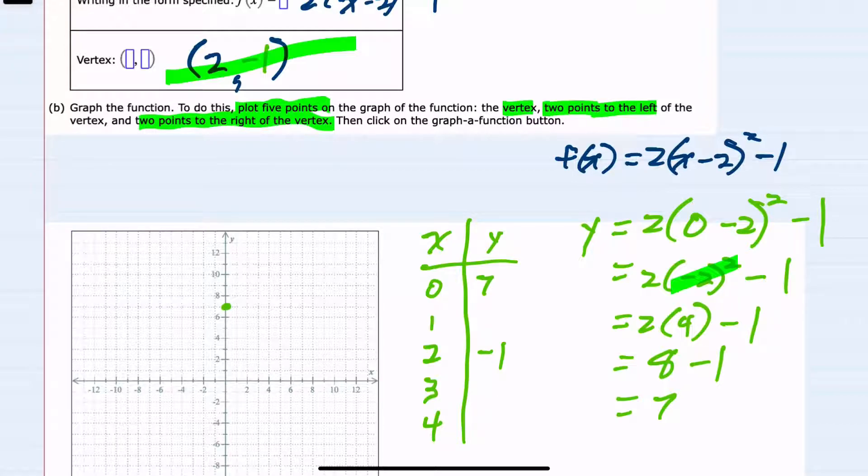We'll move to the next x value, which is 1. Now we're replacing the x with 1. Inside the parentheses, we now have 1 - 2, which is -1 squared. Moving to exponents, -1 squared is positive 1. Multiplication: 2 times 1 is 2. Then 2 - 1 is 1. So we have our next coordinate (1, 1). We already have the vertex, which is (2, -1).